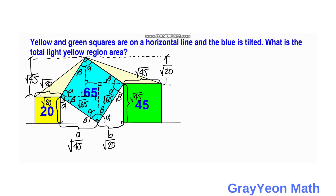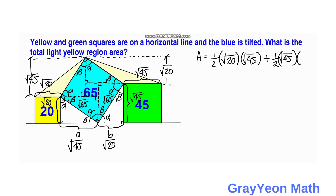For the final step, we find the area of the light yellow region. There are two triangles to add together. For the triangle above the yellow square: (1/2) × √20 × √45. Added to the triangle above the green square: (1/2) × √45 × √20. Factoring out, we get √(20 × 45) inside a single radical sign.